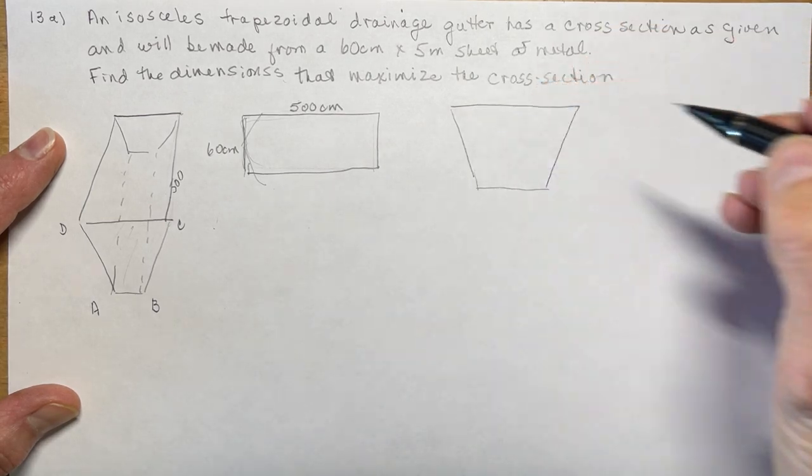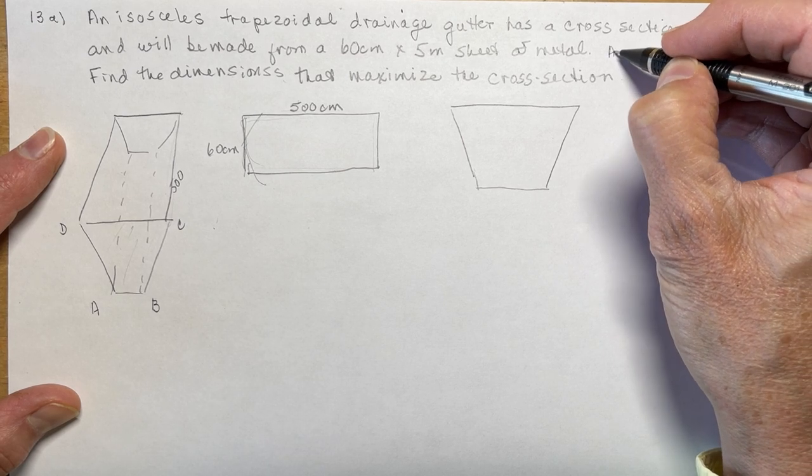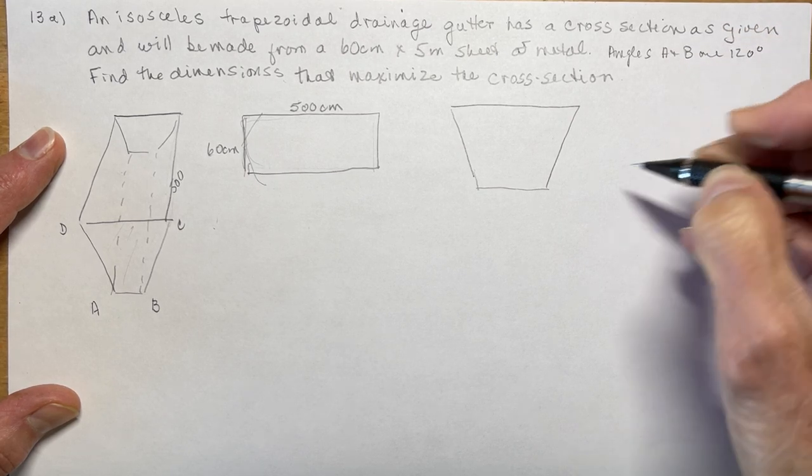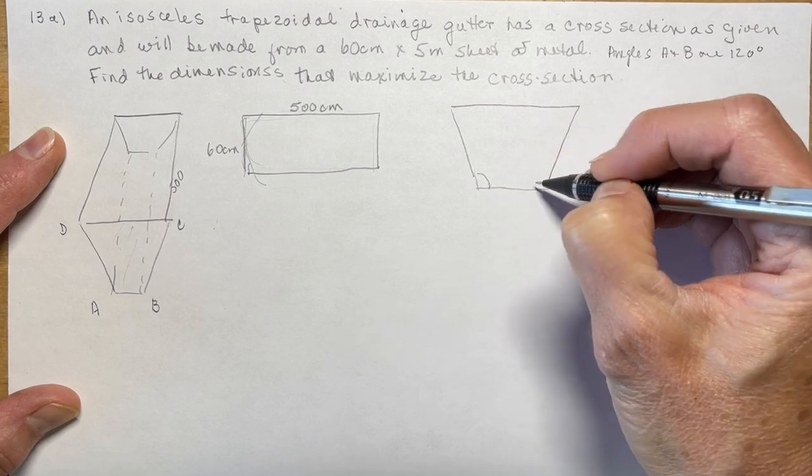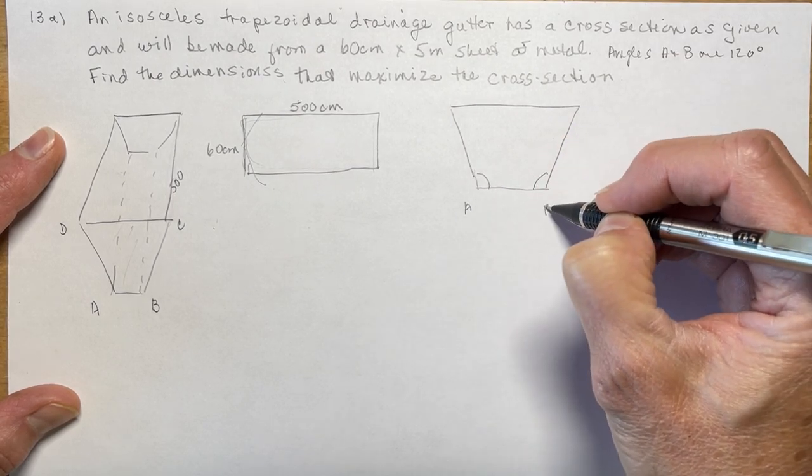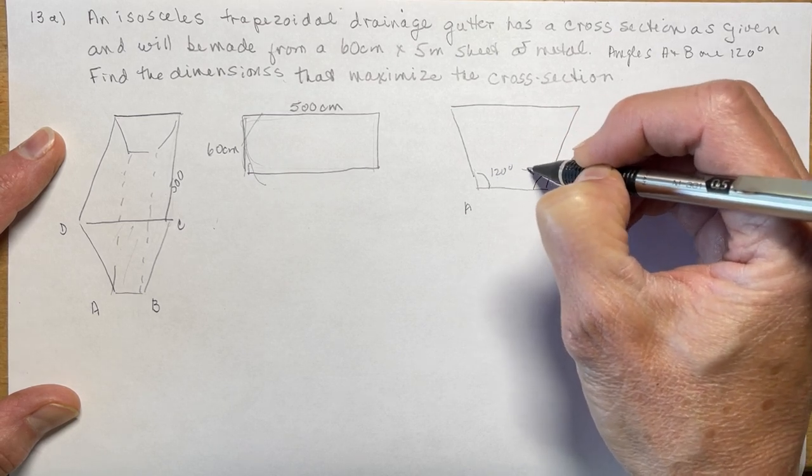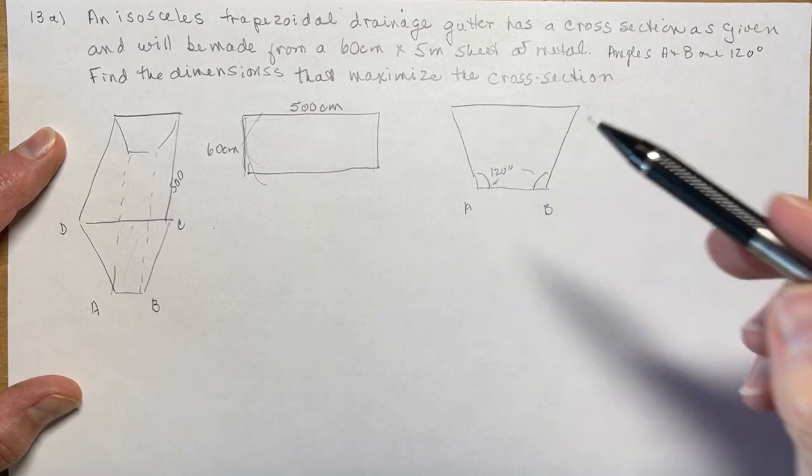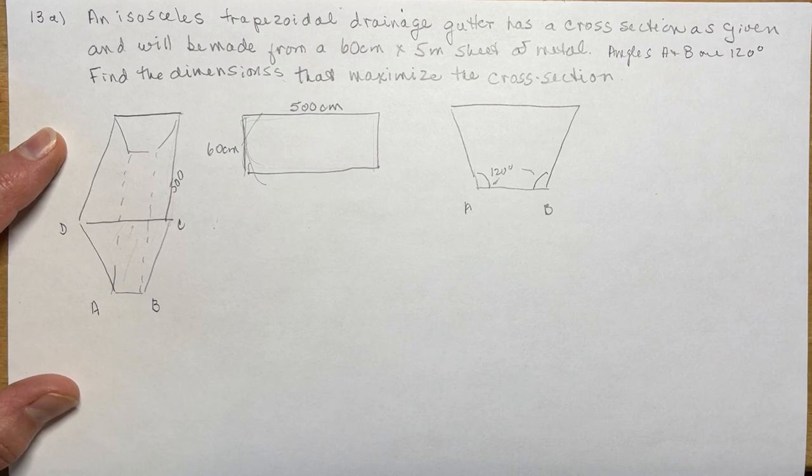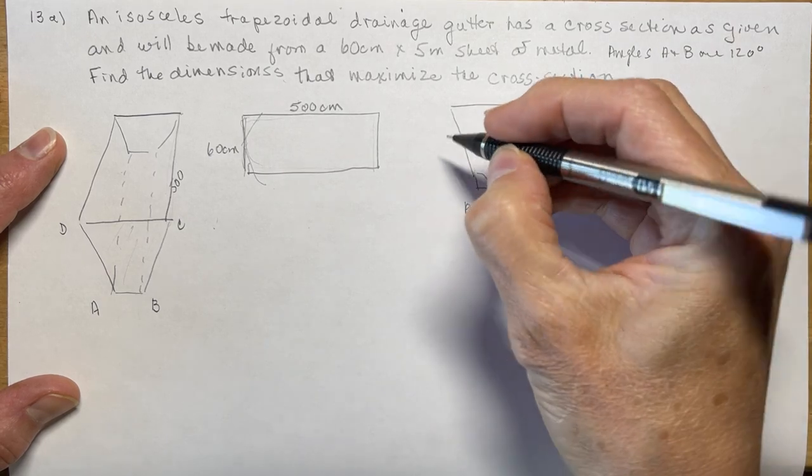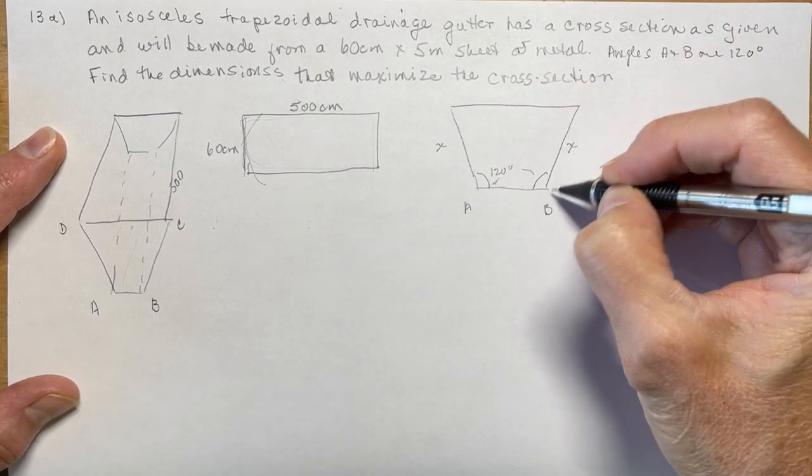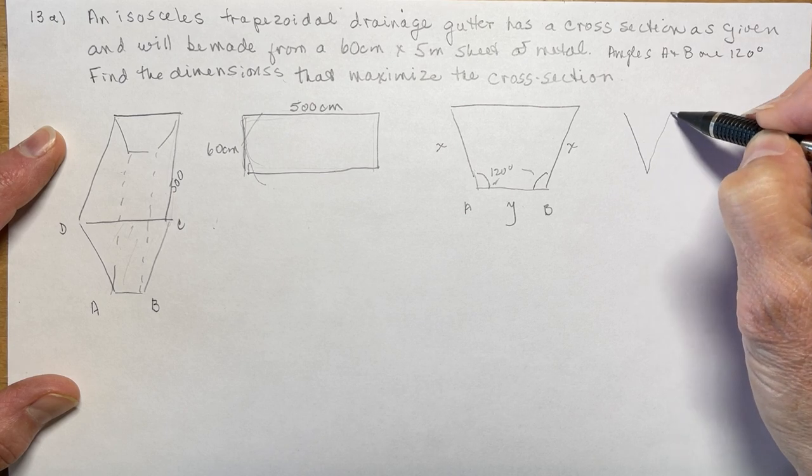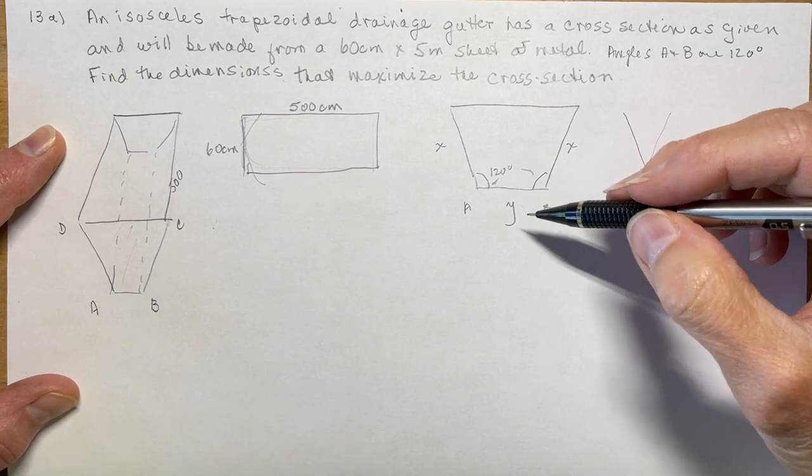It did tell you in the question that the angles at B, A, and B are 120 degrees, so that's kind of important here. So I have one angle here, one angle here. This is B and these are 120 degrees both of them. So that's something we're going to look at as well in a minute.